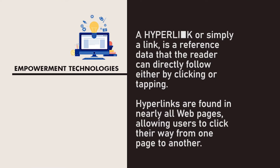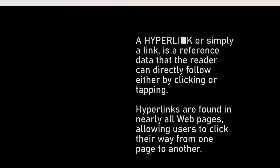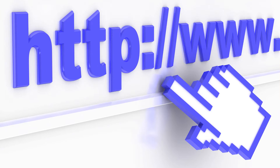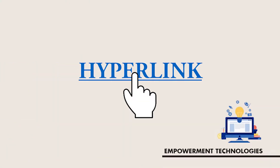Hyperlink. A hyperlink, or simply a link, is a reference data that the reader can directly follow either by clicking or tapping. Hyperlinks are found in nearly all webpages, allowing users to click their way from one page to another. In text, hyperlinks are often colored and underlined.